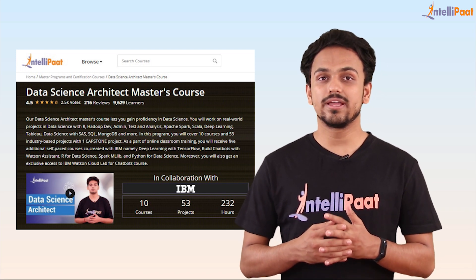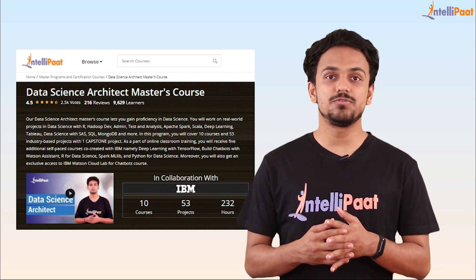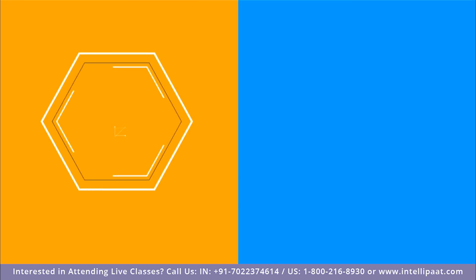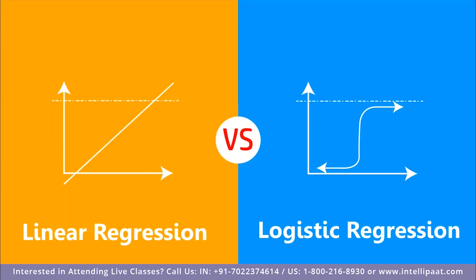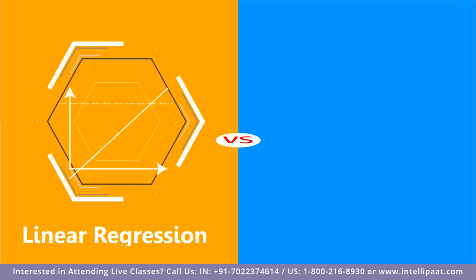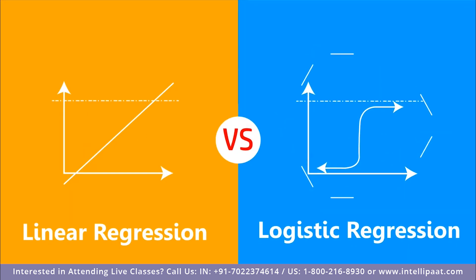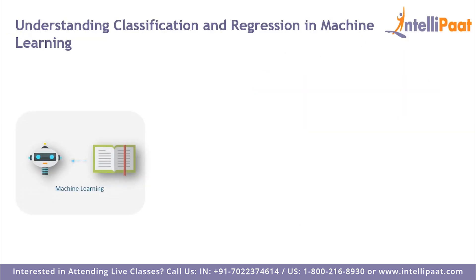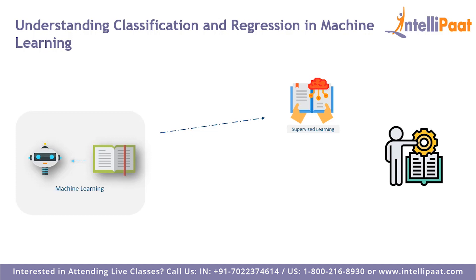Before understanding linear and logistic regression, we first need to understand classification and regression in machine learning. In machine learning there are three types: supervised learning, unsupervised learning, and reinforcement learning. Let me briefly explain each.